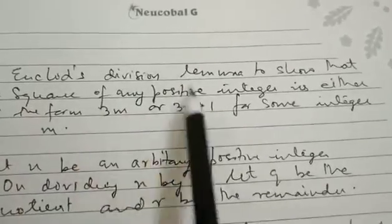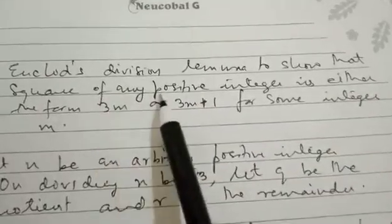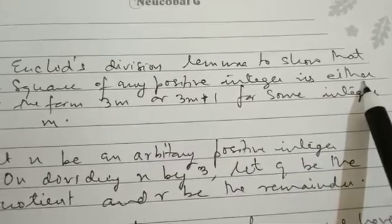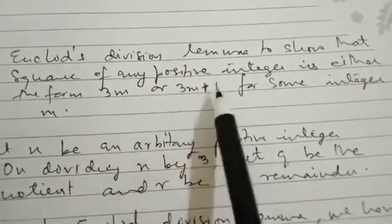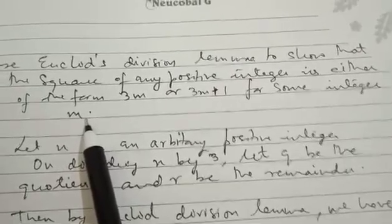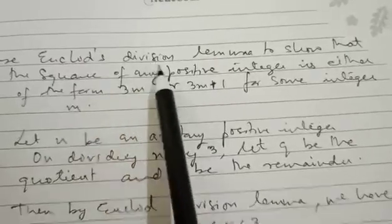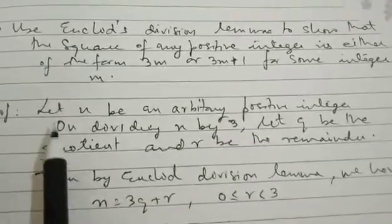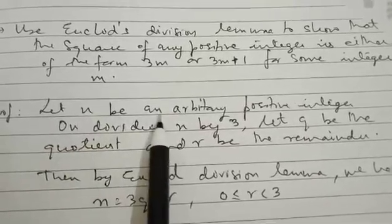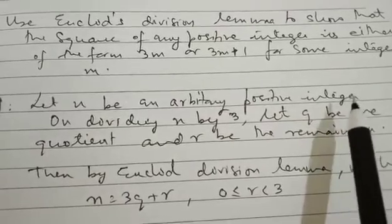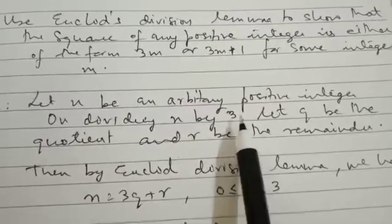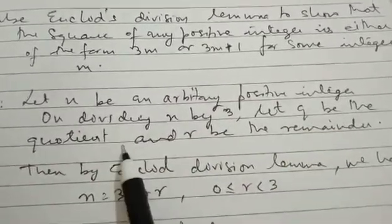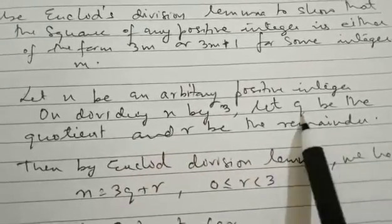Now let me take one more example of this pattern. The question is: use Euclid's division lemma to show that the square of any positive integer is either of the form 3m or 3m plus 1 for some integer m. Now how to proceed? The first line is again the same: let n be an arbitrary positive integer.